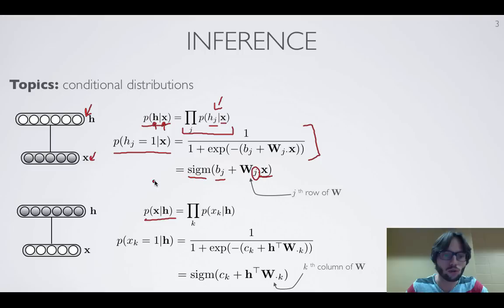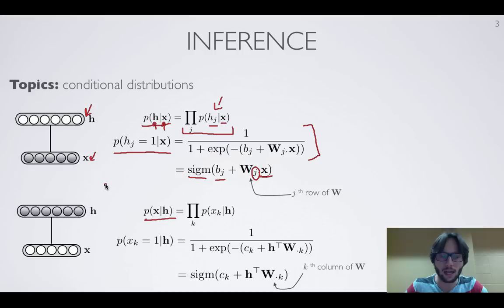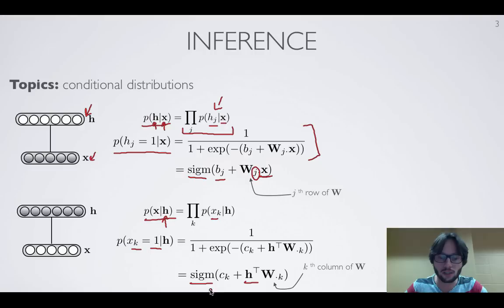The restricted Boltzmann machine is symmetric since it's an undirected graphical model, so the form of X given H is not really different from H given X. Similarly, each element of the X vector is conditionally independent given the hidden layer, and the probability of X_k equal to 1 is the sigmoid of C_k — the bias for the k-th input — plus the product of the hidden layer with the k-th column of matrix W.